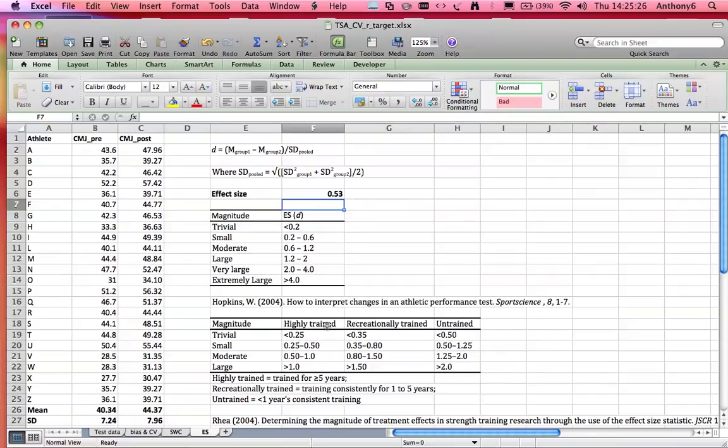So assuming that our athletes were highly trained, then using Rhea's data we can see that 0.53 actually relates to a moderate change in means. Whereas if these guys were in fact recreationally trained or untrained, then it just represents a small change. But of course still a good change, we just want to avoid any changes being classed as trivial because the chances are they're not really real or anything worth discussing further.